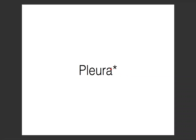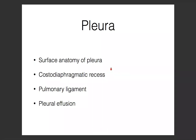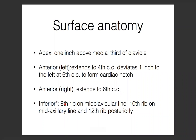We'll start with the pleura. The things that are usually asked about are the surface anatomy of the pleura, the costodiaphragmatic recess, the pulmonary ligament, and clinically, they ask about pleural effusion. We're going to be talking about these four things. The blood supply, innervation - all of these things when it comes to pleura are not that important. So: surface anatomy, costodiaphragmatic recess, pulmonary ligament, and pleural effusion. We'll start with the surface anatomy.